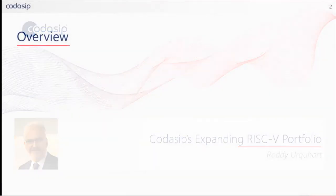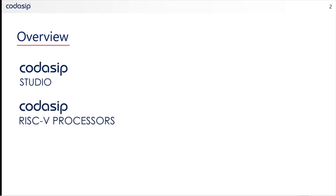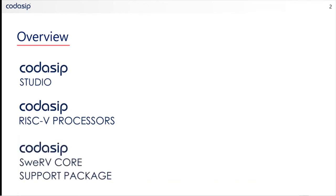In case you haven't heard of Codisip before, I'd like to mention briefly our three main offerings. They are the Codisip Studio EDA tool, which is used to develop processor IP cores. You can create your own instruction set and microarchitecture using the tools. Then there is the Codisip family of RISC-V processor cores, which were created using Studio. And thirdly, there is the Codisip SwerveCore support package.